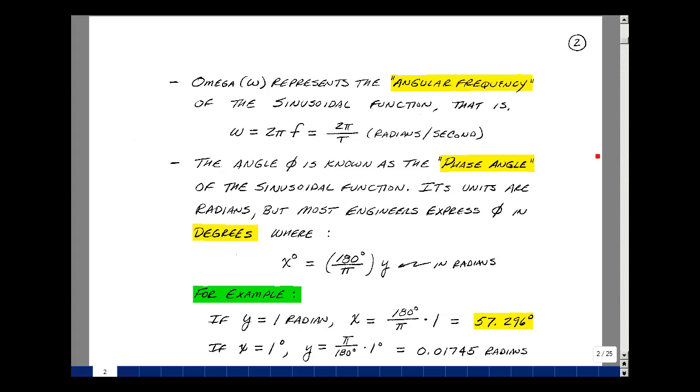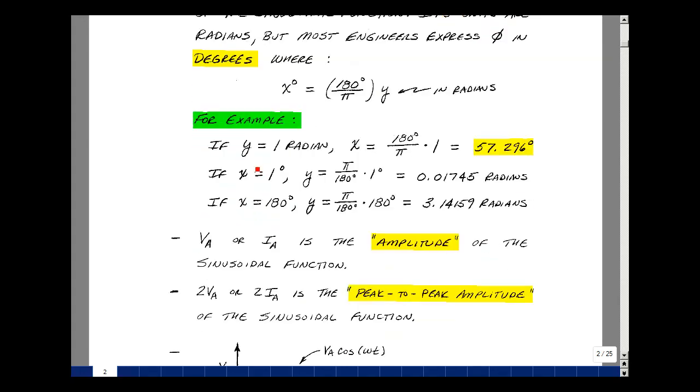Let me do a couple of simple examples. Suppose that y was 1 radian. Then x would be 180 over pi times 1, that'd be 57.296 degrees. If x were equal to 1, we could solve for y by cross-multiplying pi and dividing by 180, and that would give me 0.0174 radians. If x were 180 degrees, we can solve this equation for y. Cross-multiply by pi, divide by 180. The 180s cancel, and you get pi, which is 3.14159 radians.